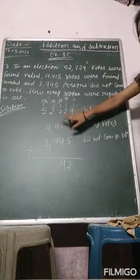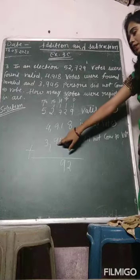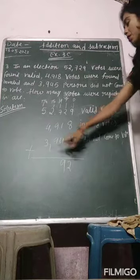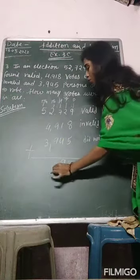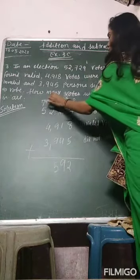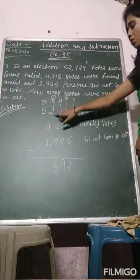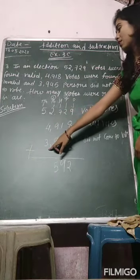Now 7 plus 9 plus 9, it is 25. So 5 will write here. 2 plus 2 plus 4 plus 3.